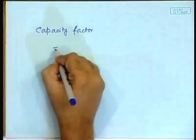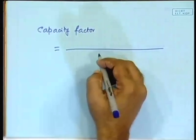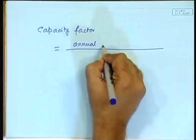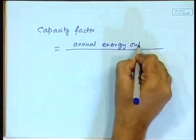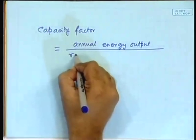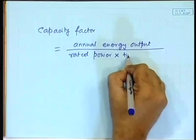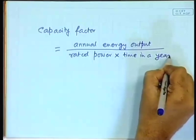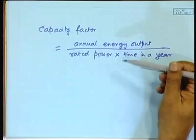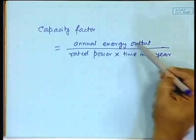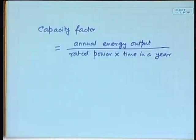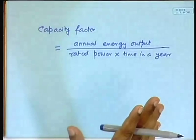The capacity factor is the ratio of the annual energy output to the rated power multiplied by time — that is, rated power times hours in a year. It is a ratio between energy and energy — power times time is energy — and this is called the capacity factor. You may have heard of the term load factor in case of conventional power plants; it is essentially the same concept: out of the whole capacity available, how much is actually utilized.